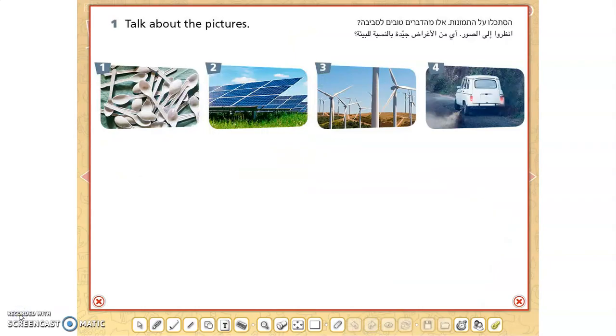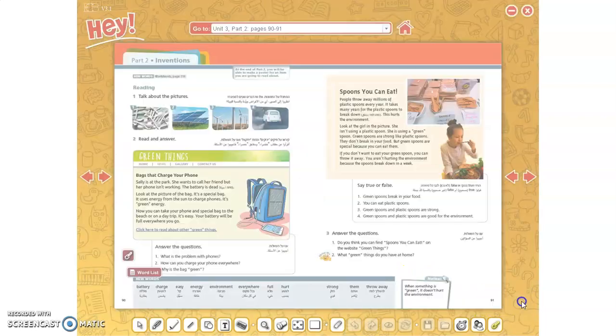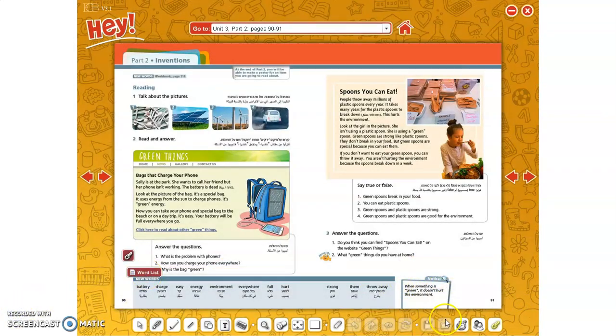Page 90, exercise 1, reading. Look at the picture and think which items are good for the environment. הסתכלו על התמונות ואימרו אילו תמונות טובות לסביבה. Notice box: when something is green, it doesn't hurt the environment. כאשר אנחנו אומרים משהו שהוא ירוק, הכוונה שהוא בעצם טוב לסביבה, הוא לא מזיק לסביבה.